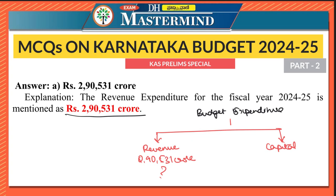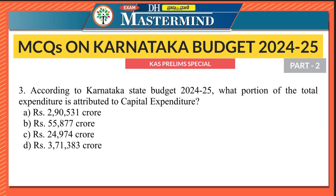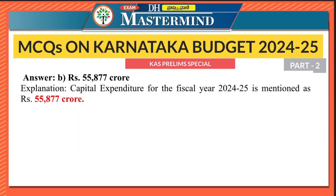Please remember that the revenue expenditure for budget year 2024-2025 is 2,90,531 crore. The third question: According to Karnataka State Budget 2024-25, what portion of the total expenditure is attributed to capital expenditure? The right option is option B — rupees 55,877 crore. So the capital expenditure for fiscal year 2024-25 is 55,877 crore.